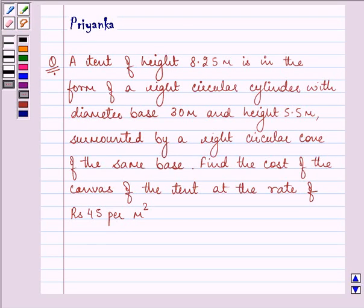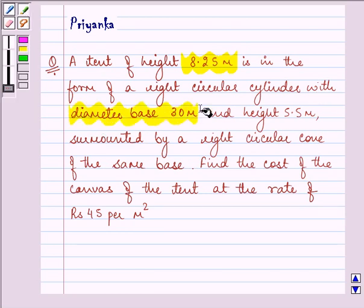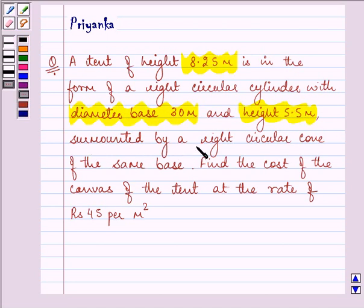Hello friends, how are you all doing today? The question says a tent of height 8.25 meters is in the form of a right circular cylinder with diameter base 30 meters and height 5.5 meters, surmounted by a right circular cone of the same base. Let's find the cost of the canvas of the tent at the rate of 45 rupees per meter square.